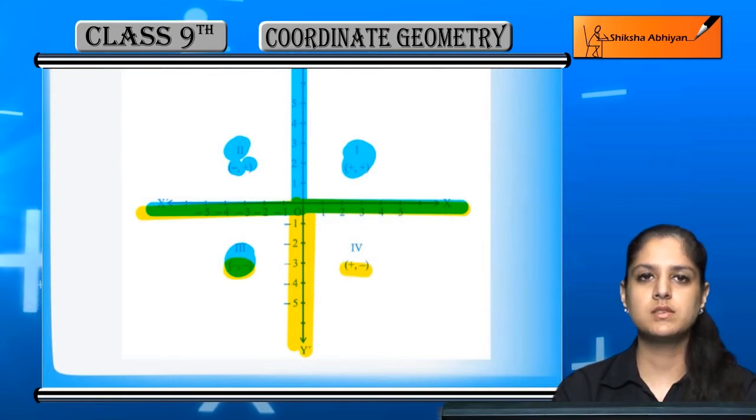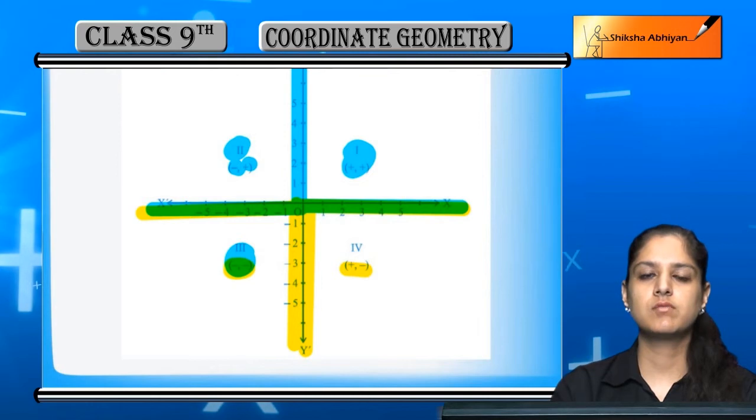So to summarize: first quadrant (+,+), second quadrant (-,+), third quadrant (-,-), fourth quadrant (+,-). Use this sign convention accordingly.